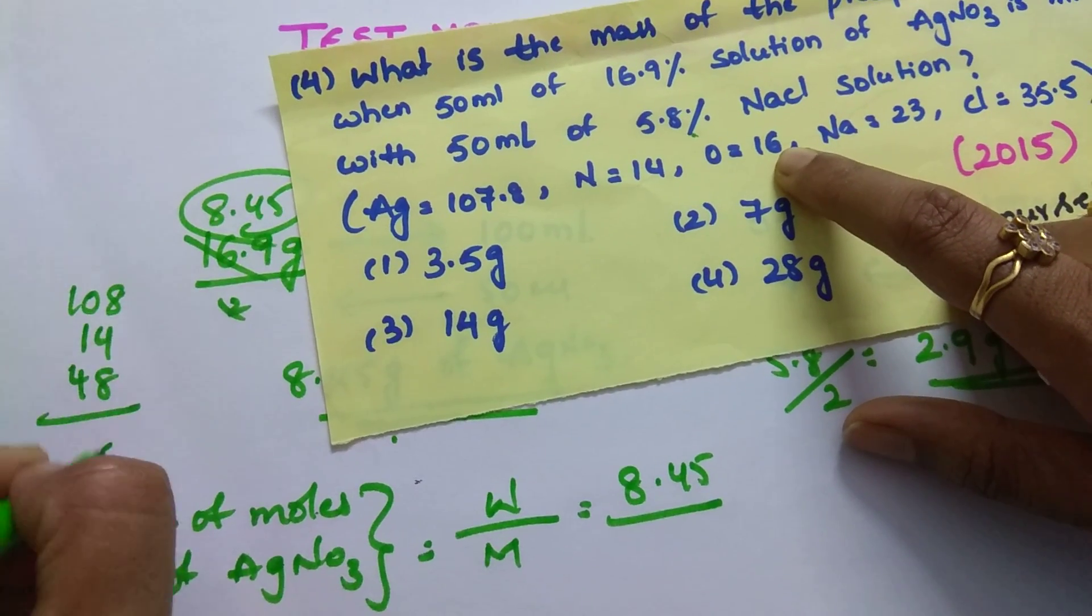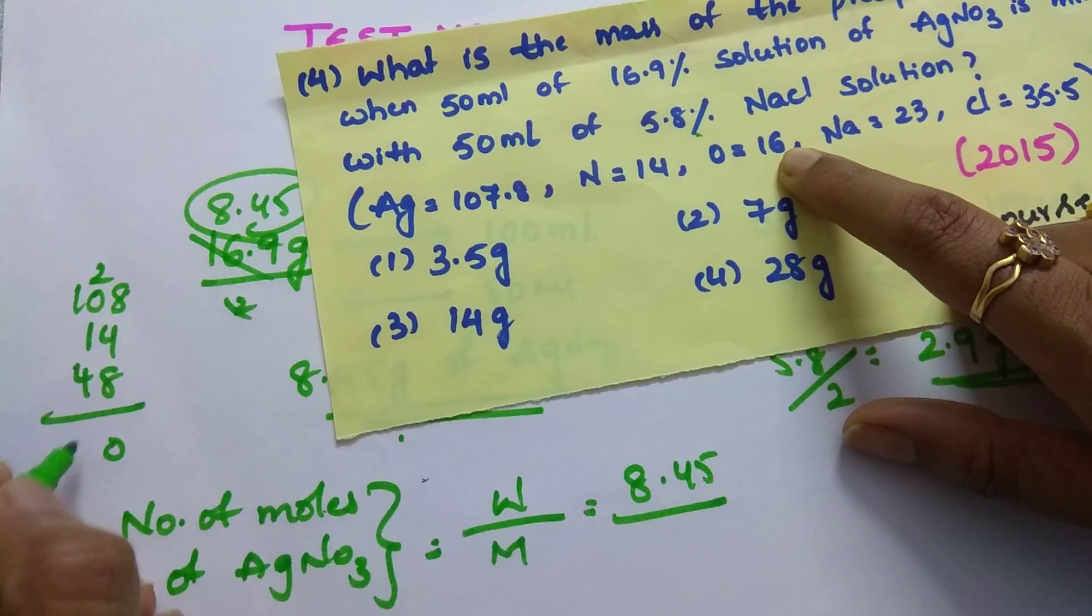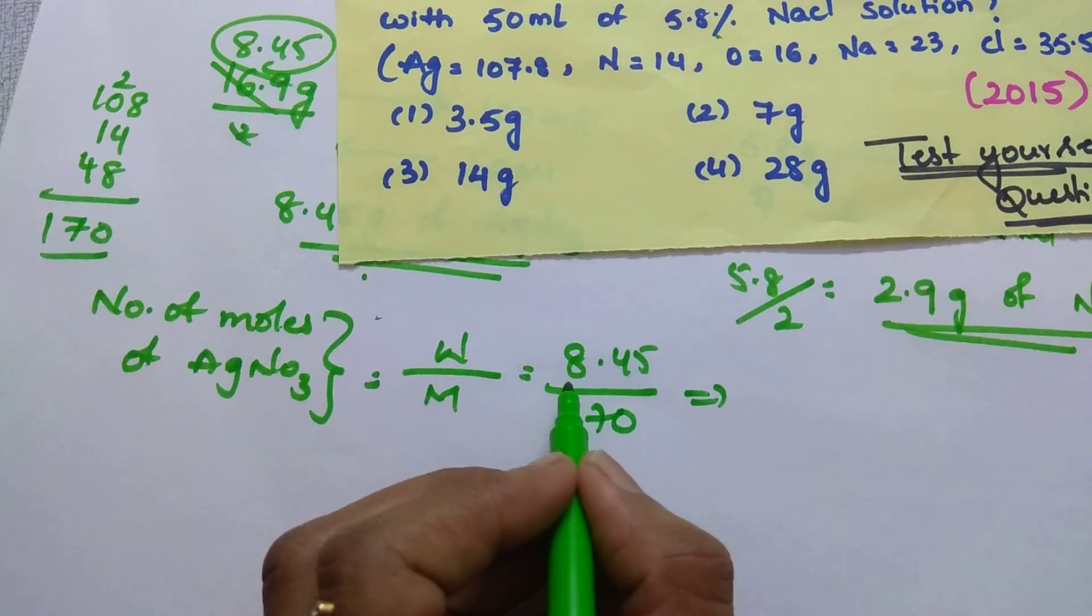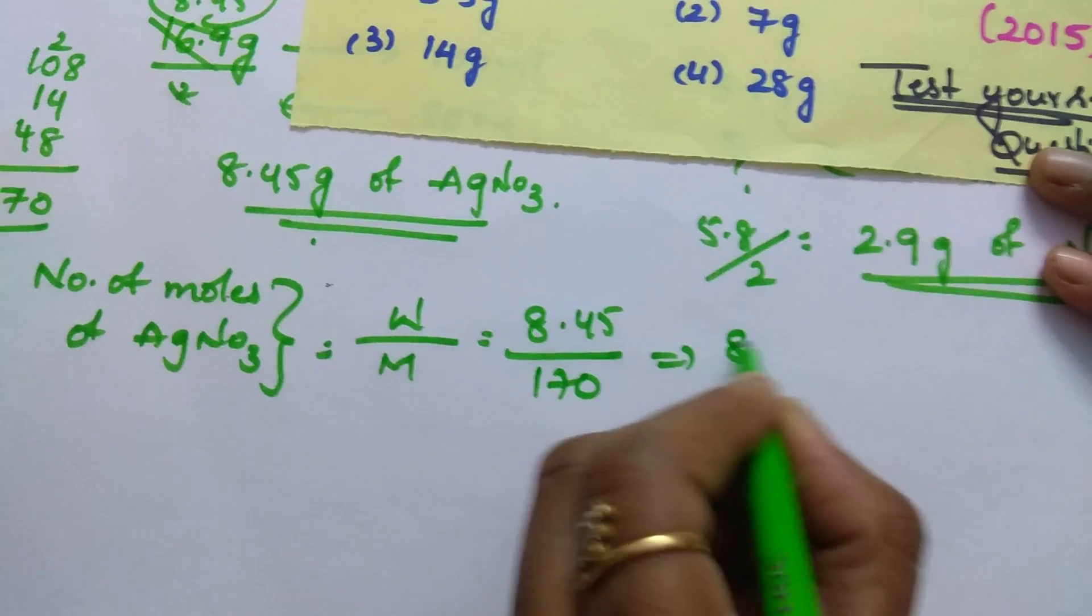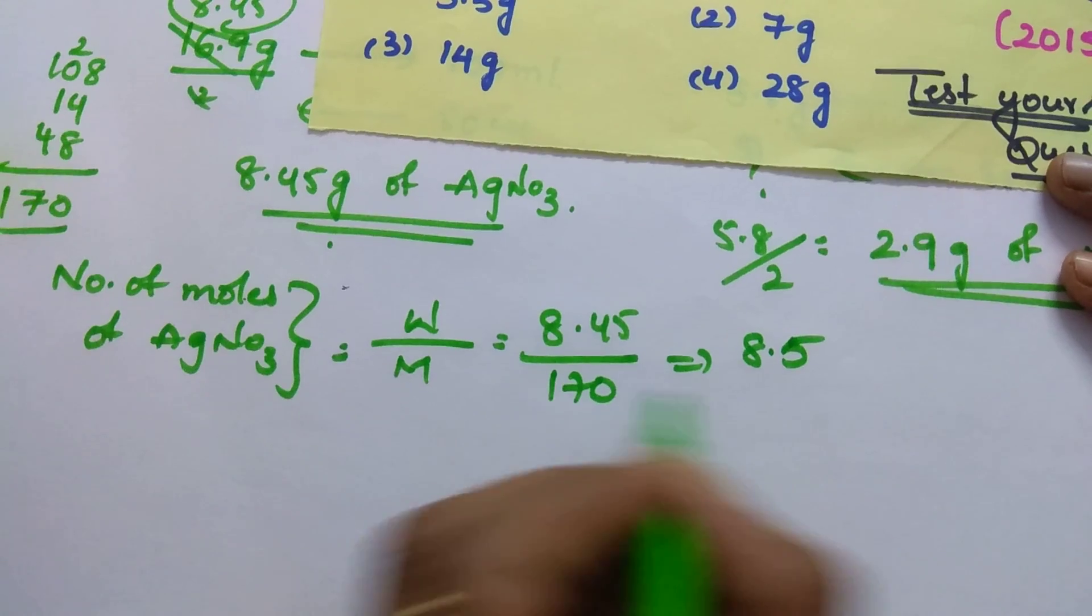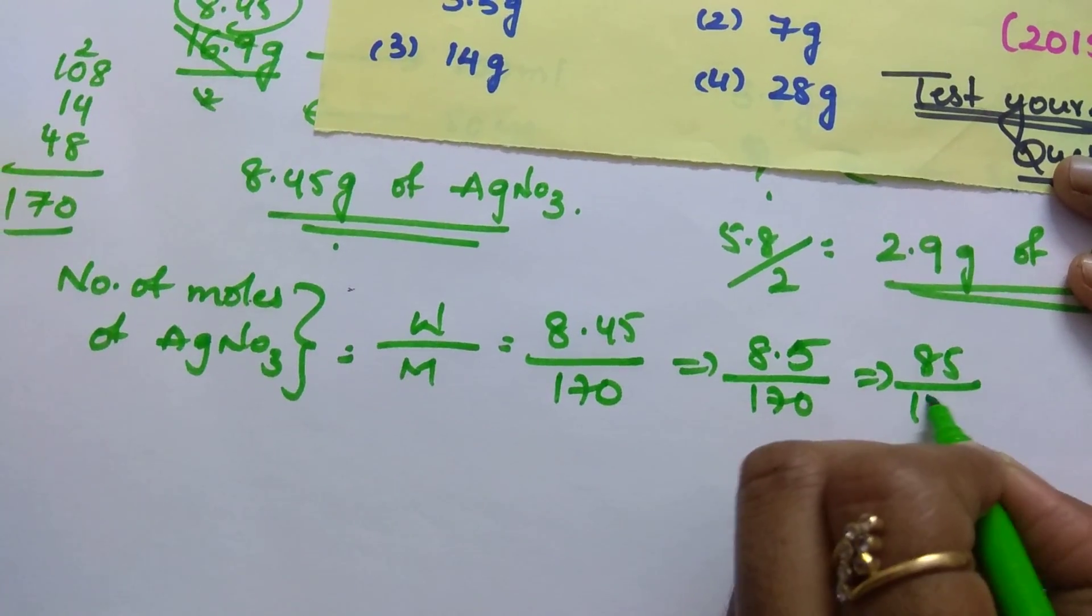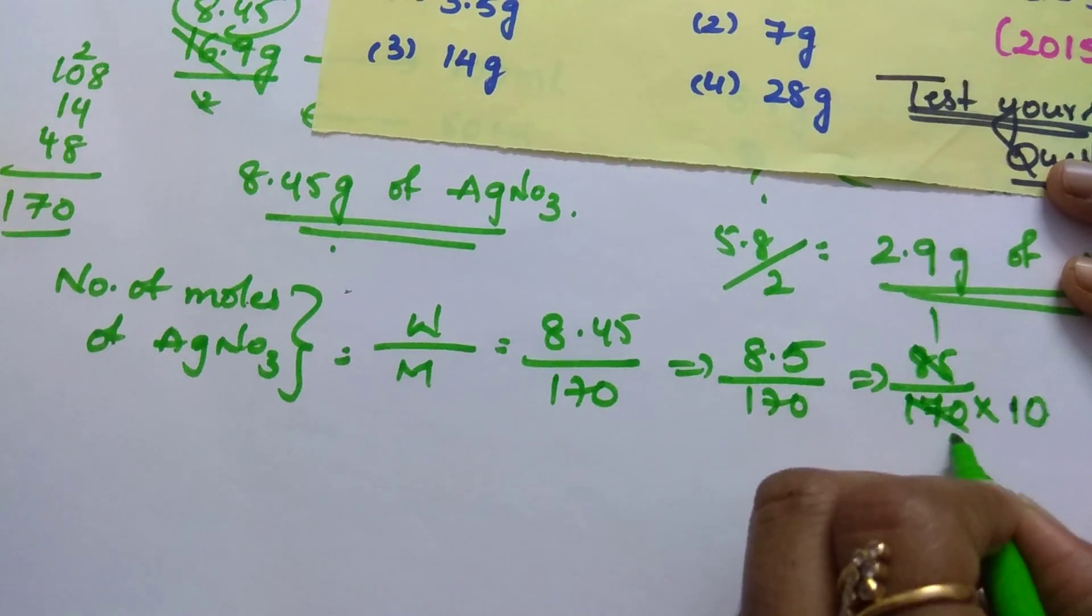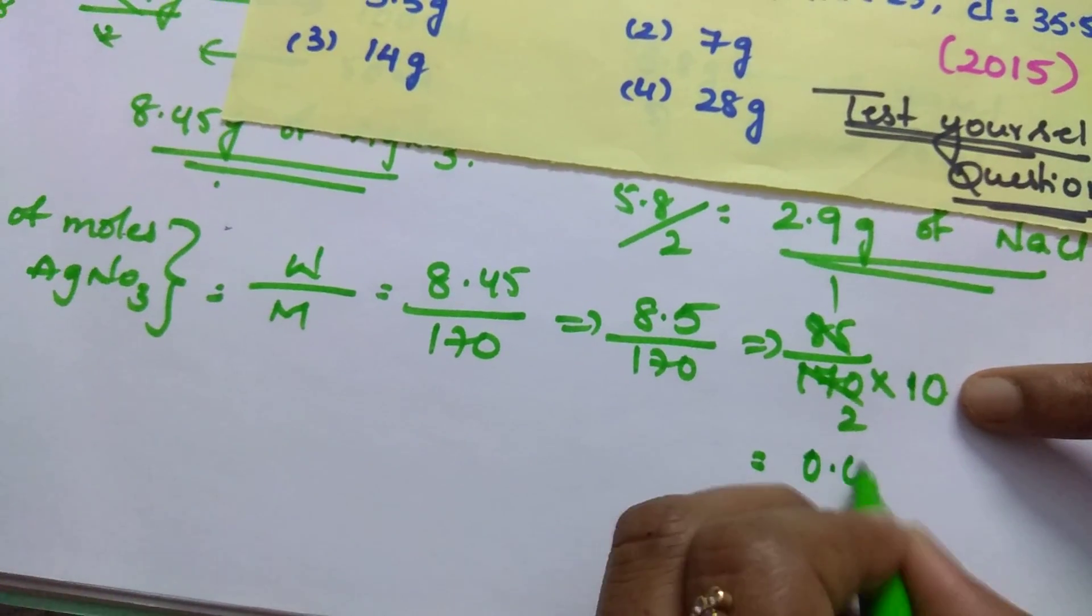If you add these up you get 170 gram. Now what you have to do is just round it off as 8.45 as 85. Divide it by 170. So you can write it as 85 divided by 170 into 10. Then 1 by 20 is 0.05.